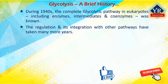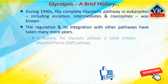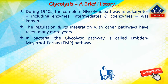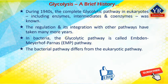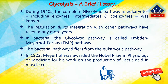The further characterization of individual enzymes and studies of the regulation of glycolysis and its integration with other pathways took many more years. In bacteria, the classic glycolytic pathway is called the Emden-Meierhoff-Parnas pathway, named after Gustav Emden, Otto Meierhoff, and Jacob Parnas. The bacterial pathway differs in some minor ways from the eukaryotic pathway. In 1922, Meierhoff was awarded the Nobel Prize in Physiology or Medicine for his work on the production of lactic acid in muscle cells.